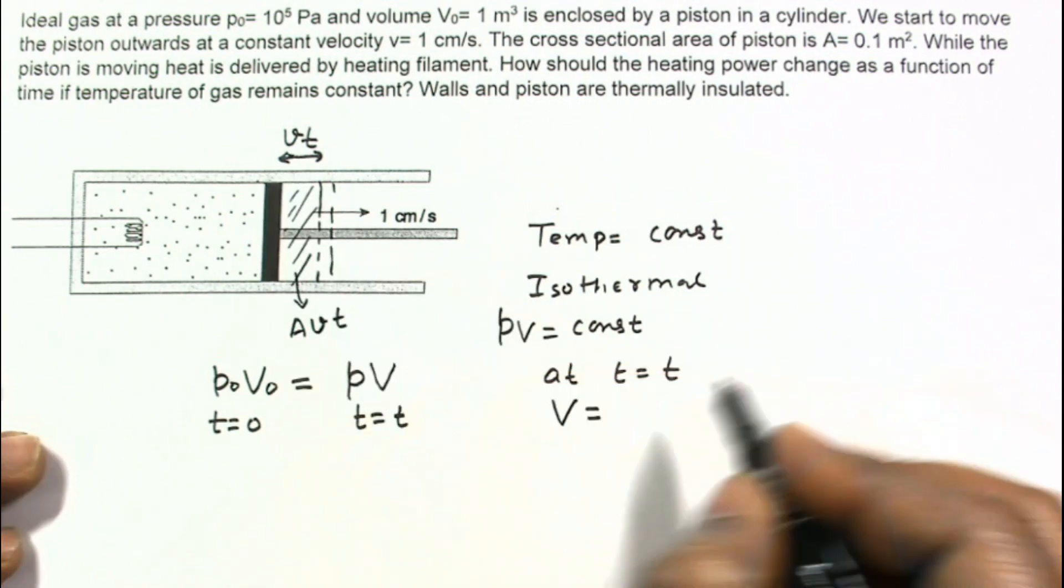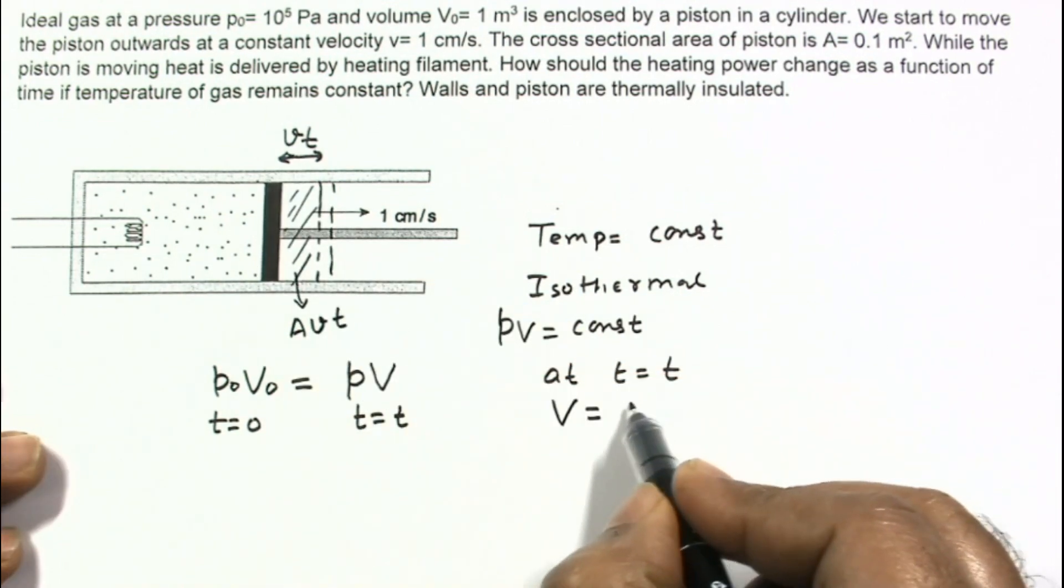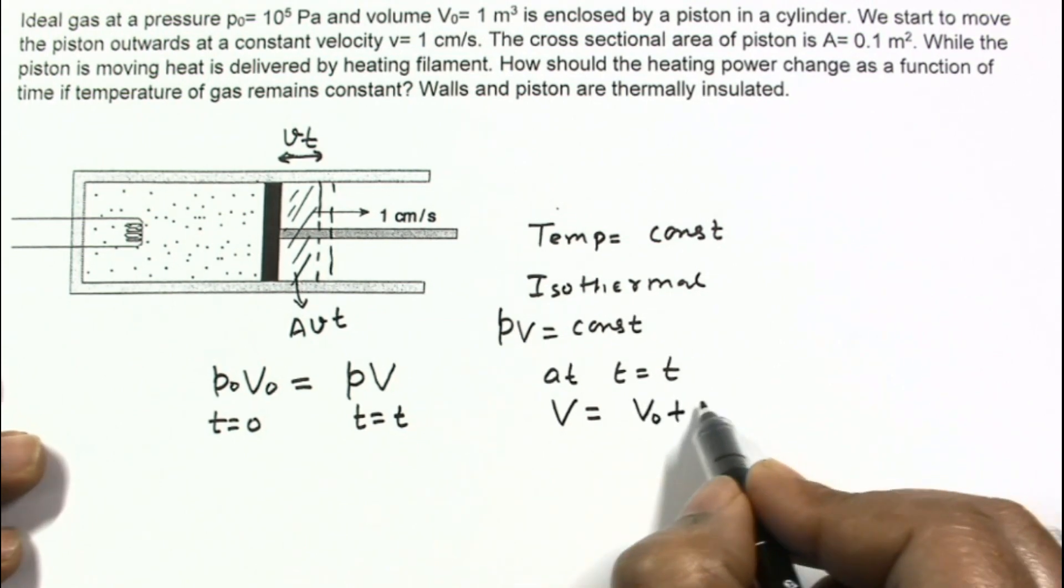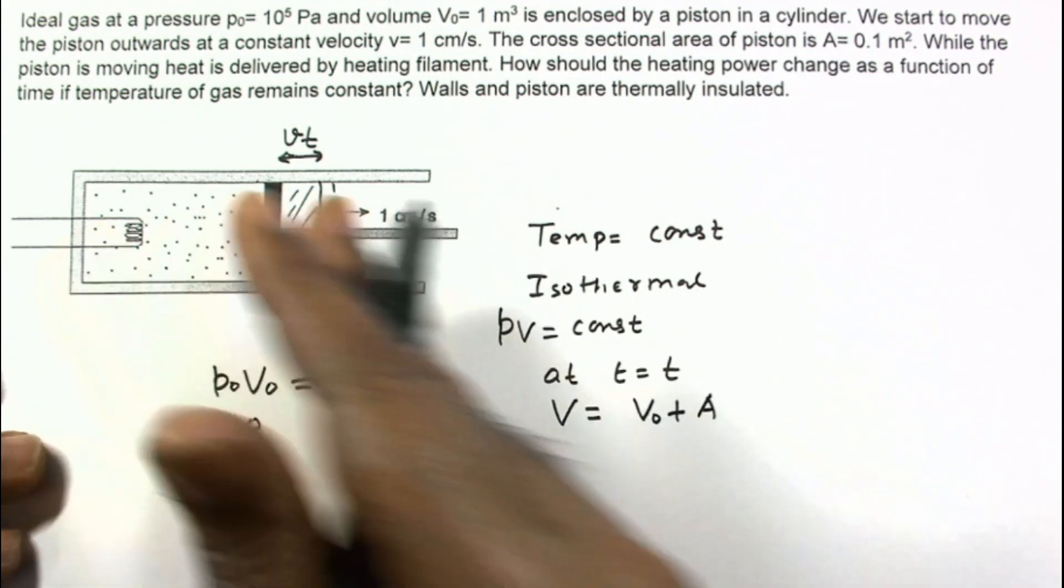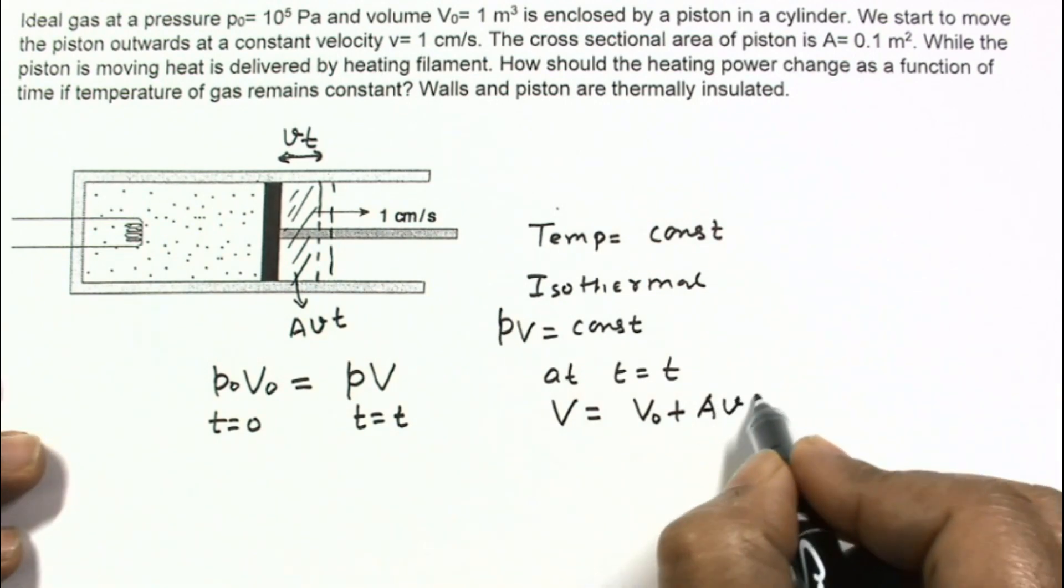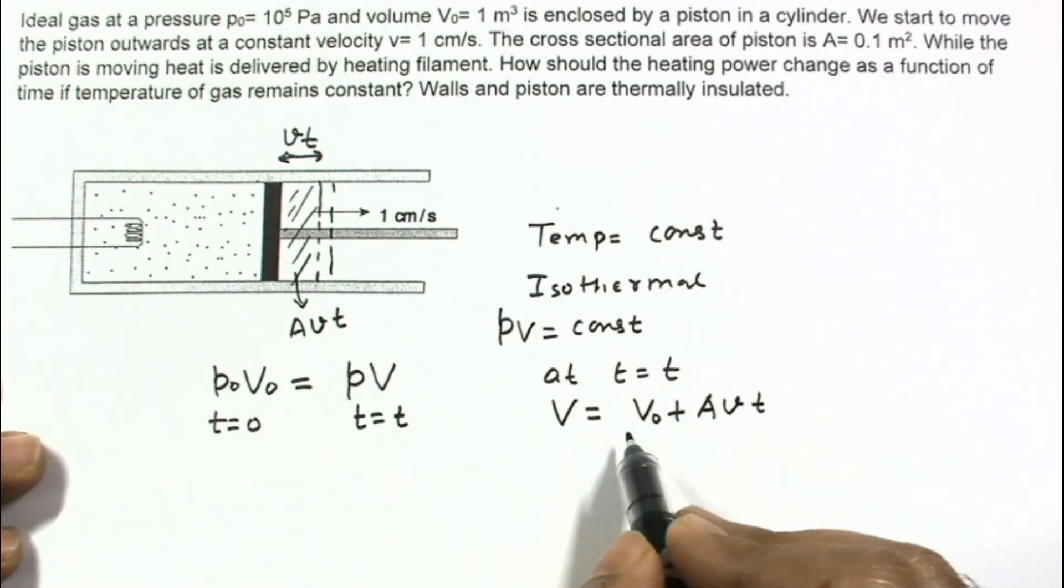So this will be initial volume plus the extra volume due to movement of this piston, A into V into T. So this is the volume at T equals T.